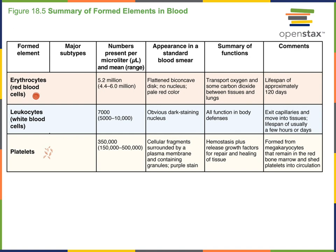Leukocytes are the white blood cells — relatively large cells that are much less numerous than erythrocytes or platelets. The leukocytes do have a nucleus, which makes them distinctive when viewing blood under the microscope — they are the only cells in blood that normally have a nucleus. The major function of leukocytes is defense against infection.